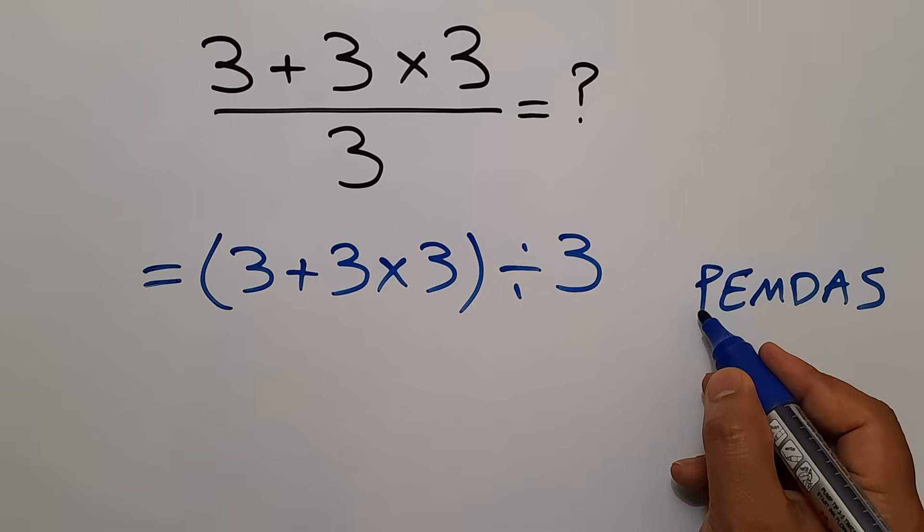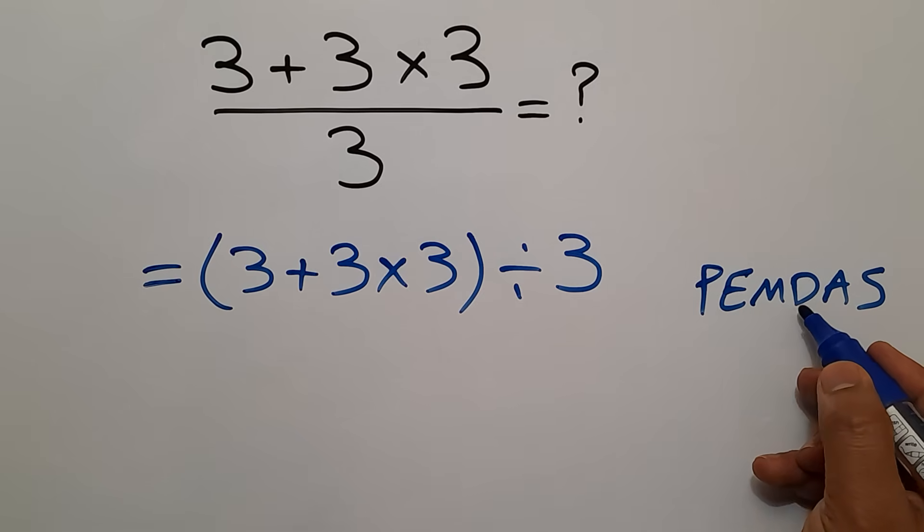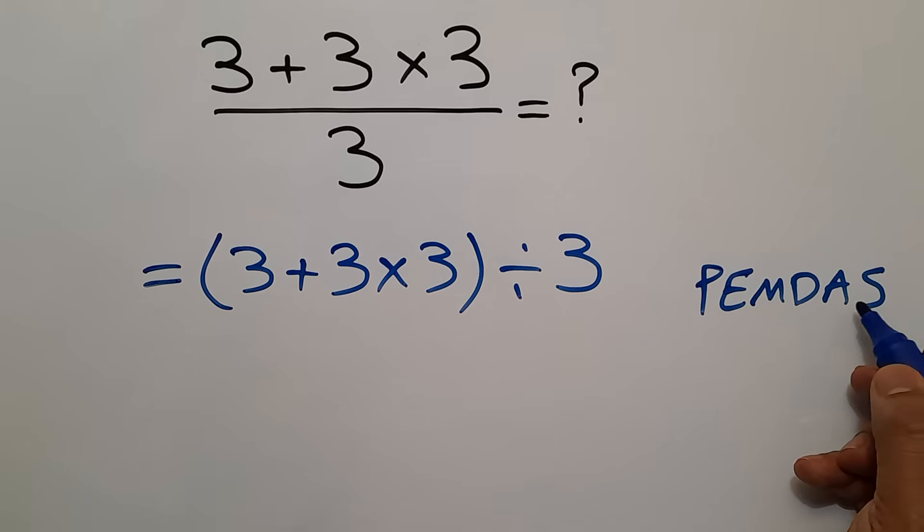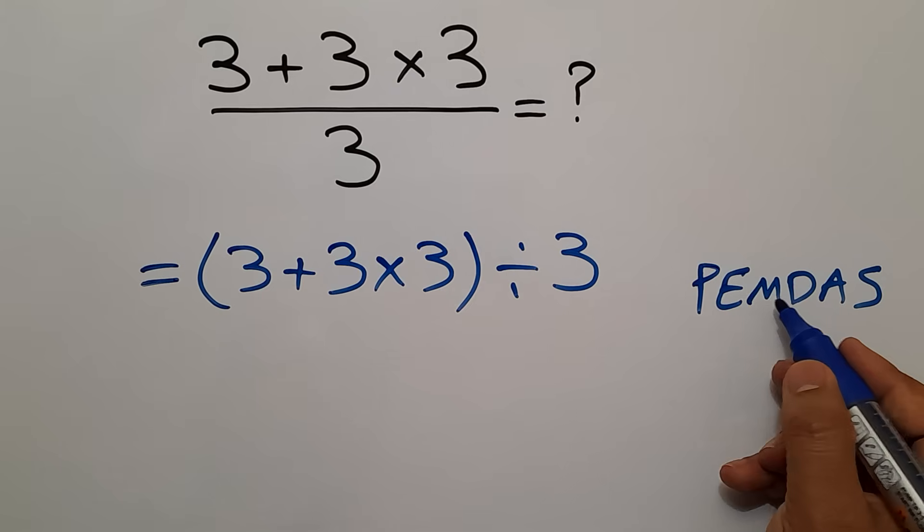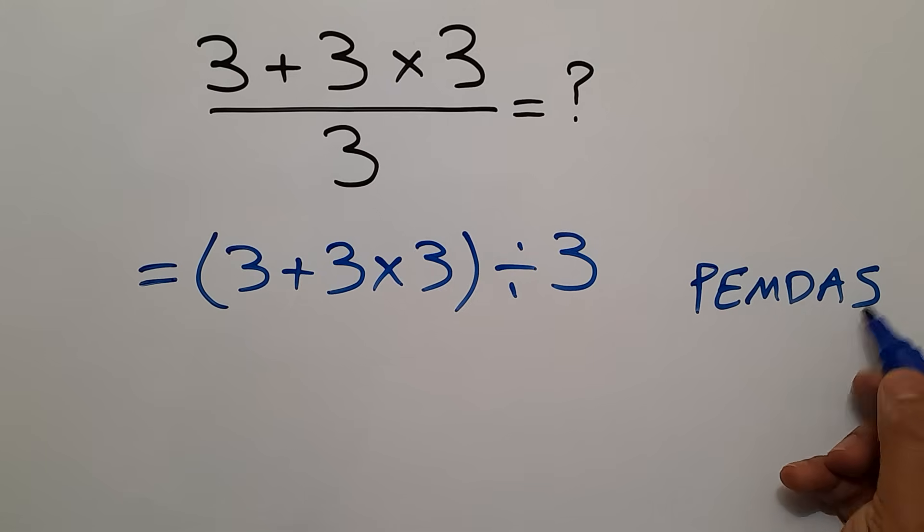We first do parentheses, then exponents, then multiplication and division, and finally addition and subtraction. Remember that multiplication and division have equal priority and we work from left to right, and the same applies to addition and subtraction.